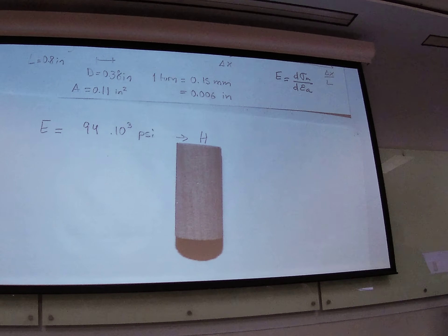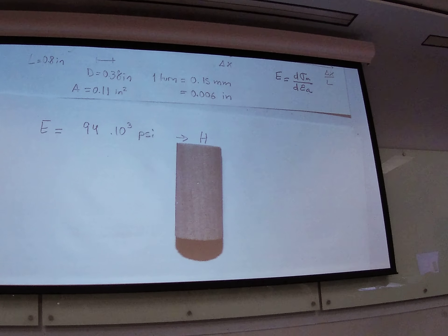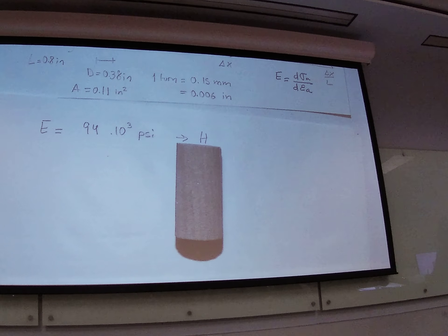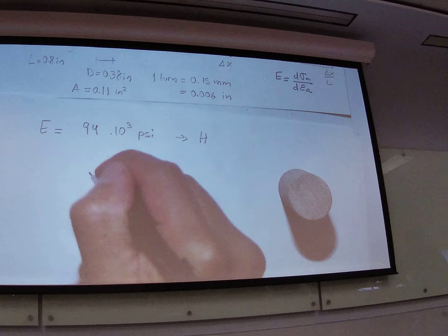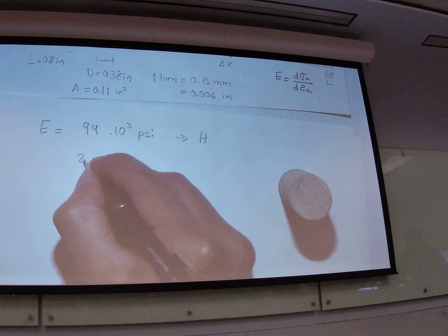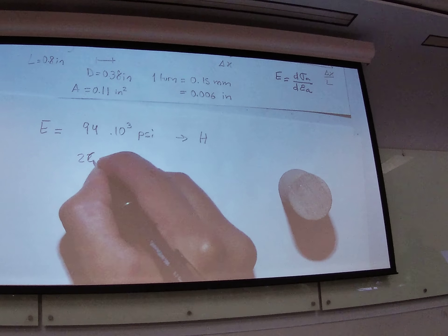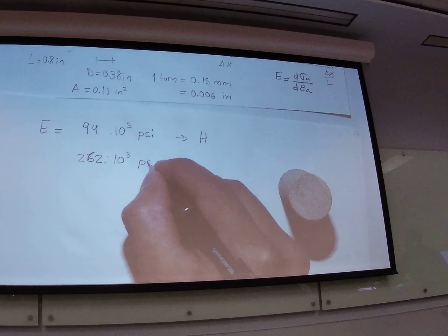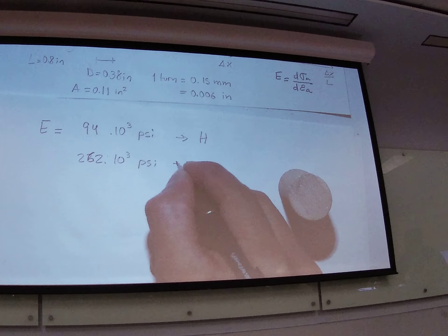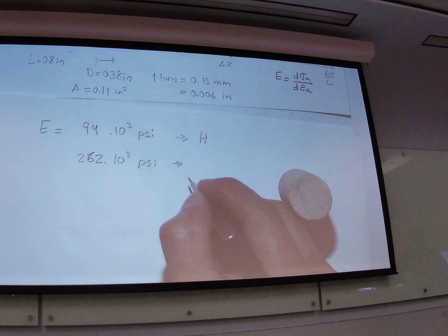So do we have any other value for the Young's modulus? Does the rest of the class get the same? — I got 262,000. I could be wrong. — 262,000 PSI? — Yes.